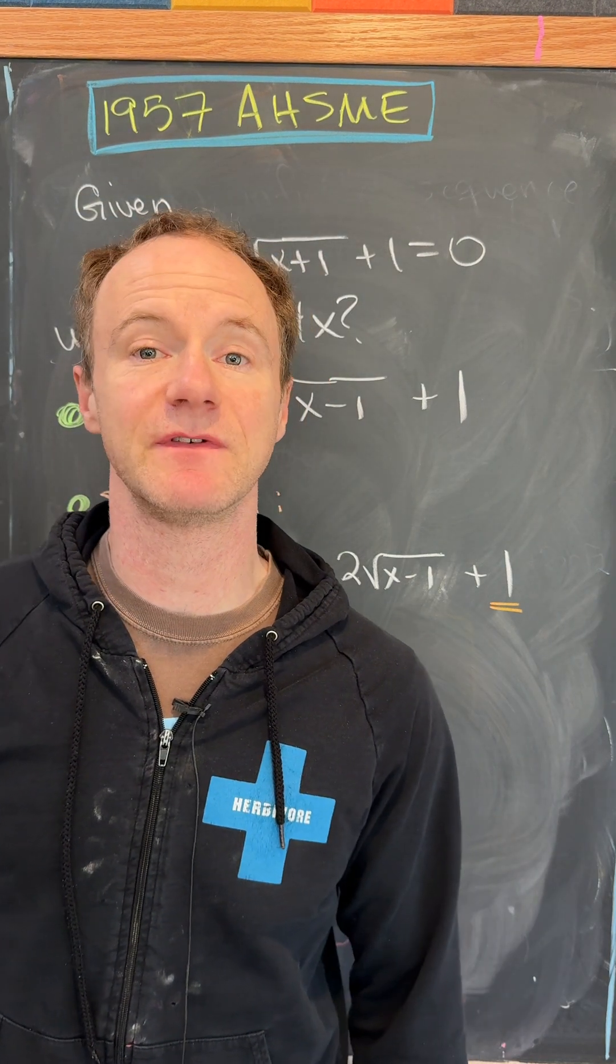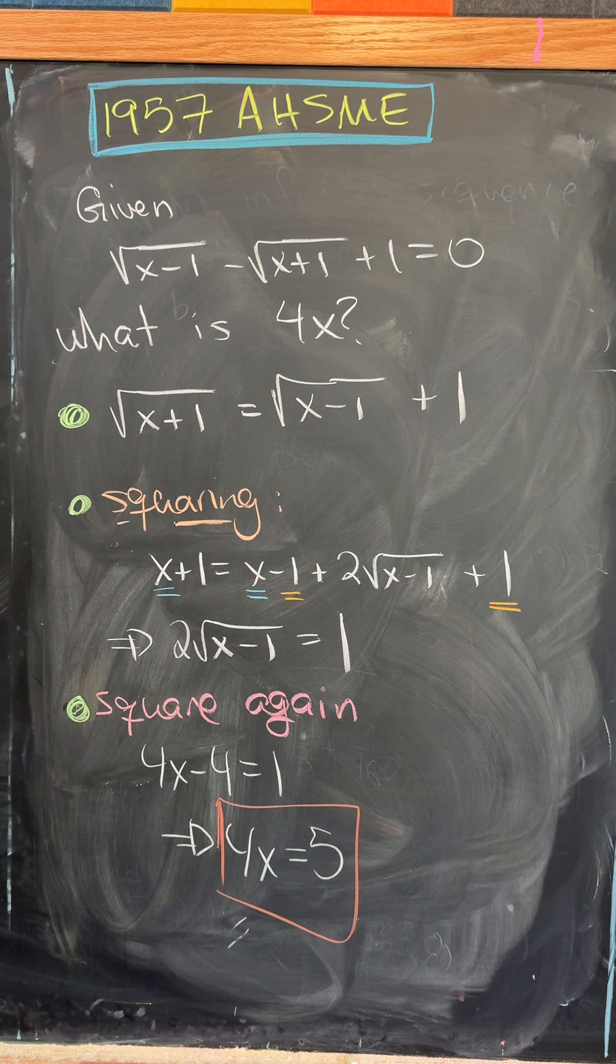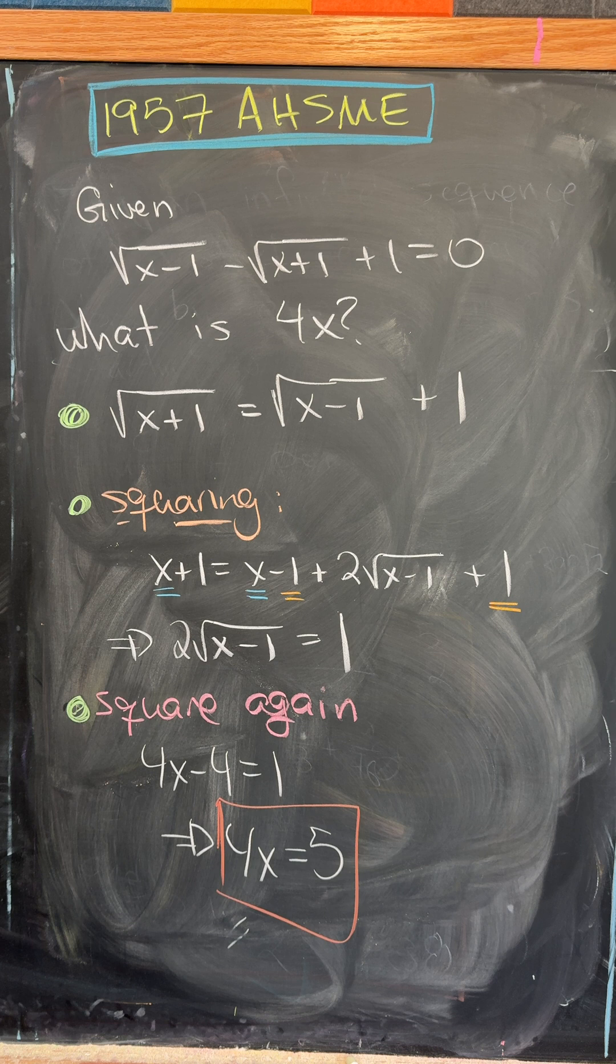Let's look at a nice problem from the 1957 American high school math exam. We're given that the square root of x minus 1 minus the square root of x plus 1 plus 1 equals 0. Our goal is to find 4x.